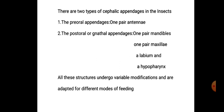Insects में दो प्रकार के cephalic appendages या शिर्षिये उपांग होते हैं। पहला, pre-oral appendages — pre का मतलब पहले, oral का मतलब mouth। यानि कि mouth से पहले के appendages जिनको pre-oral appendages कहते हैं, इनमें एक जोड़ी antennae आते हैं। One pair antennae.